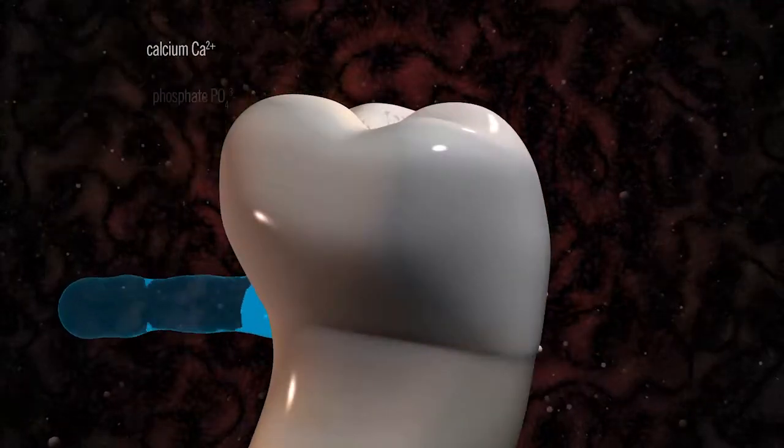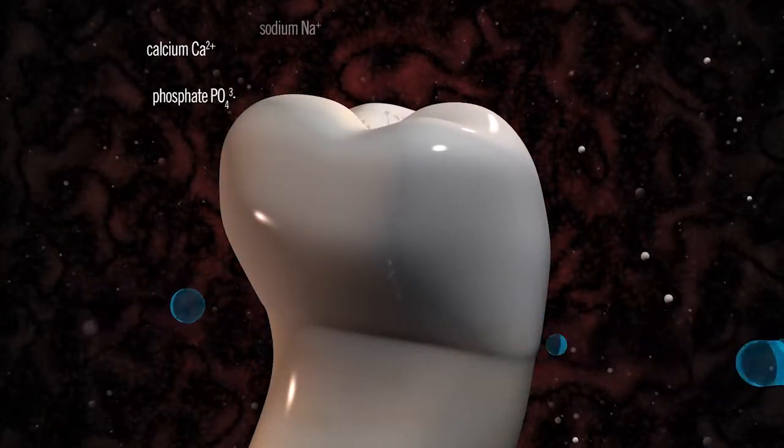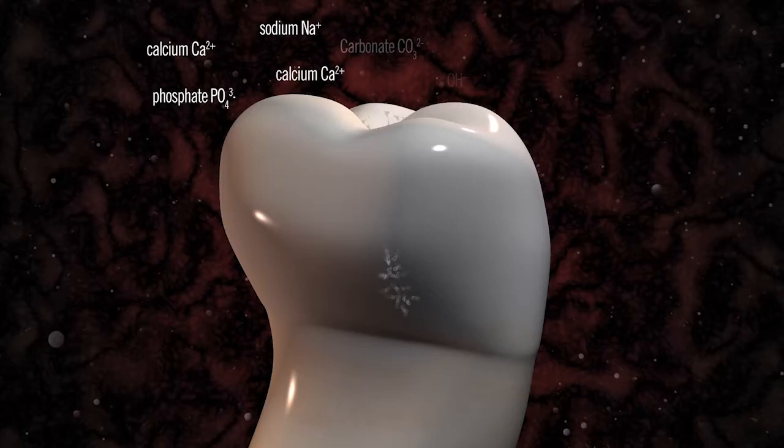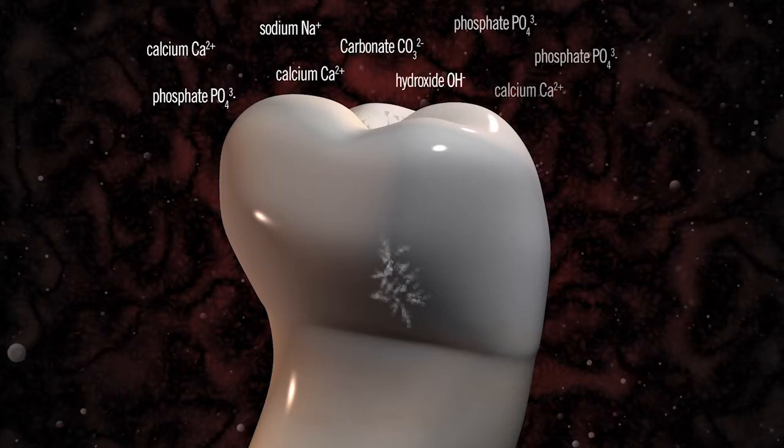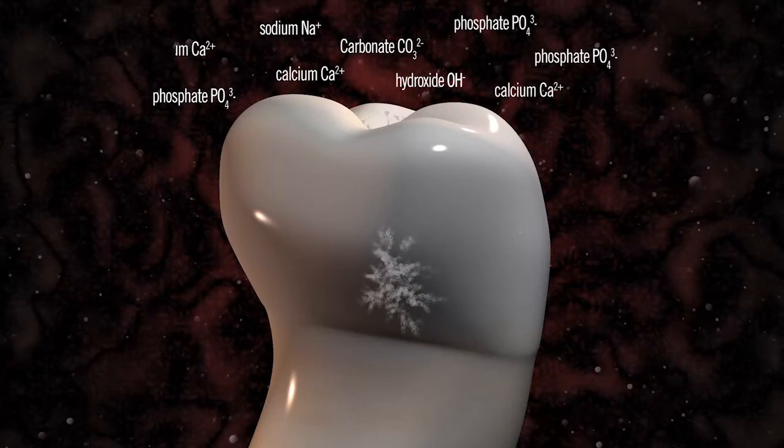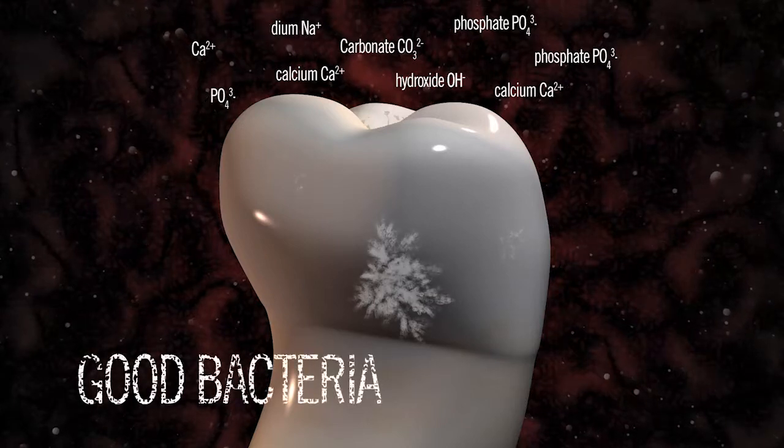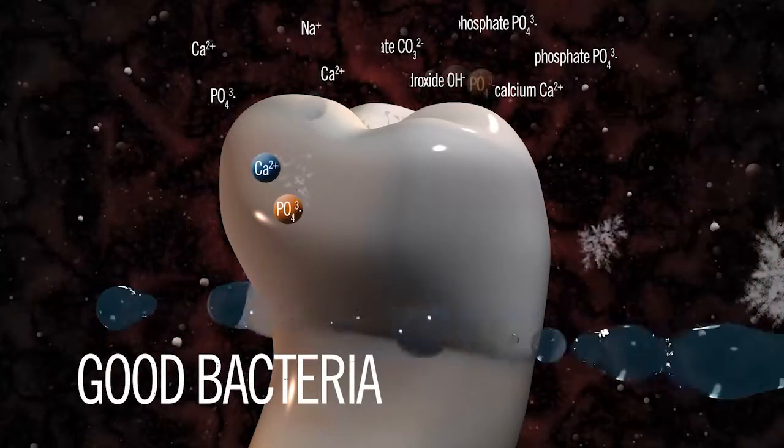The tooth's surface normally loses its minerals from acid formed by plaque bacteria after a person eats fermentable carbohydrates or sugars. The effect of saliva and the good bacteria act to facilitate remineralization.